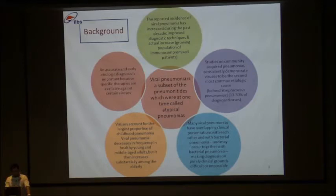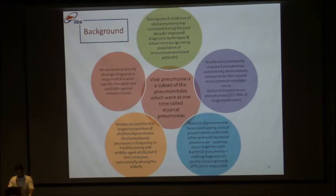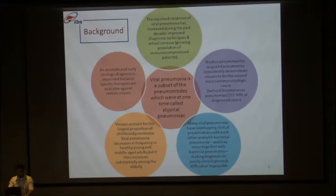Studies on community-acquired pneumonias consistently demonstrate that viruses are second only behind Streptococcus pneumoniae, and the incidence of viral pneumonia is 13 to 50% of diagnosed cases. Accurate and early etiological diagnosis is important because specific therapies are available against many of these viruses. Viruses account for the largest proportion of childhood pneumonias. Viral pneumonia decreases in frequency in healthy young and middle-aged adults, only to increase again in the elderly. Many viral pneumonias have overlapping clinical presentations with each other and with bacterial pneumonia, and many occur together with bacterial pneumonia.